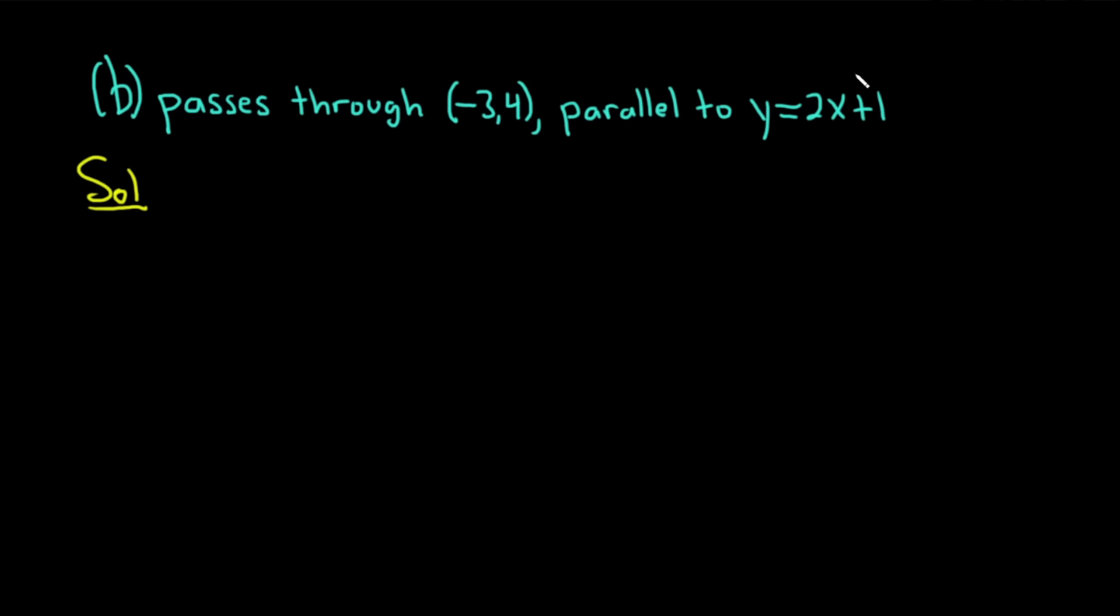So because our line is parallel to this line, and this line is in the form y equals mx plus b, we can identify the slope of this line. You can see right away that m is equal to 2. And because our line is parallel, our line must have the same slope. So therefore, the slope of our line is also 2. Because parallel lines have the same slope.